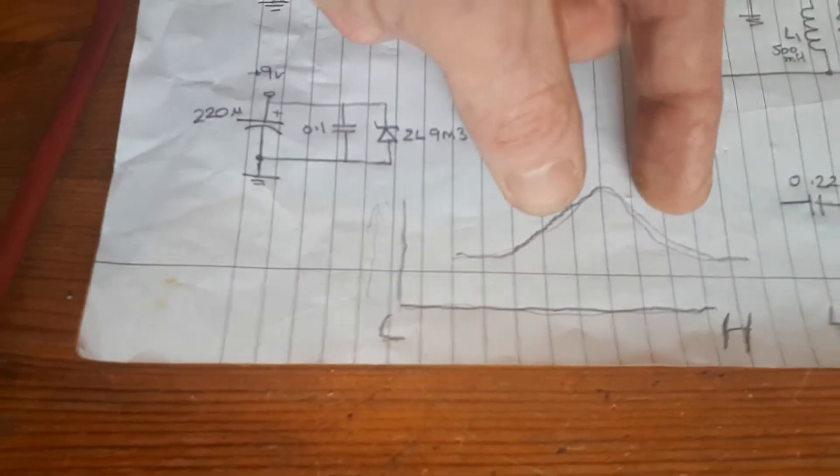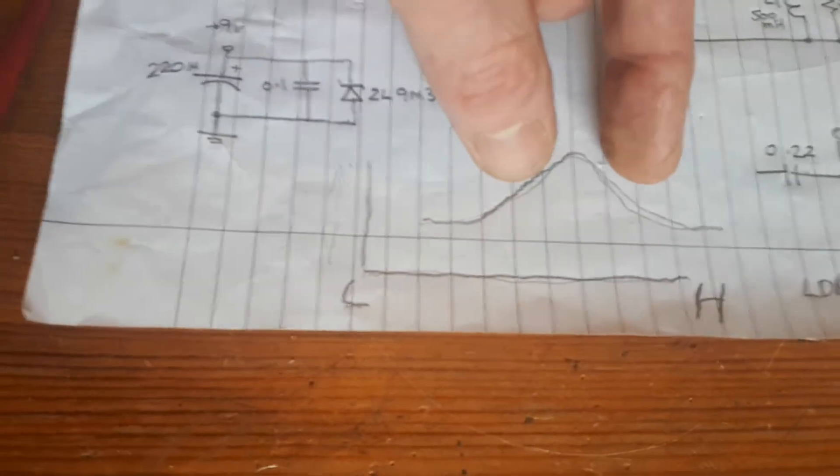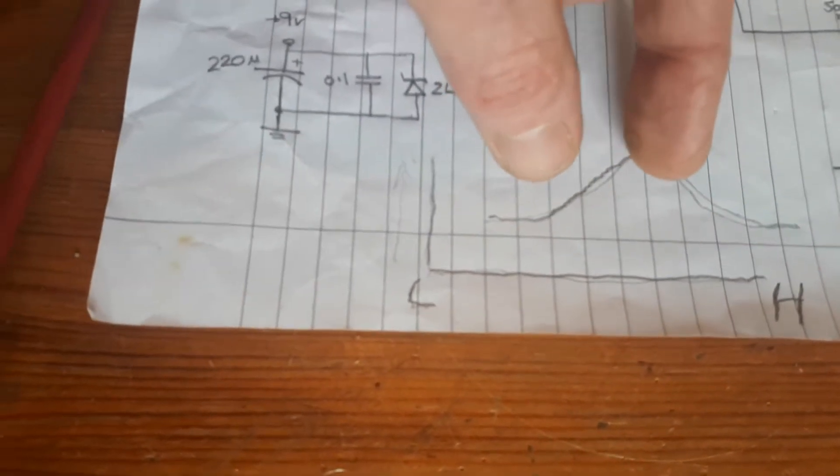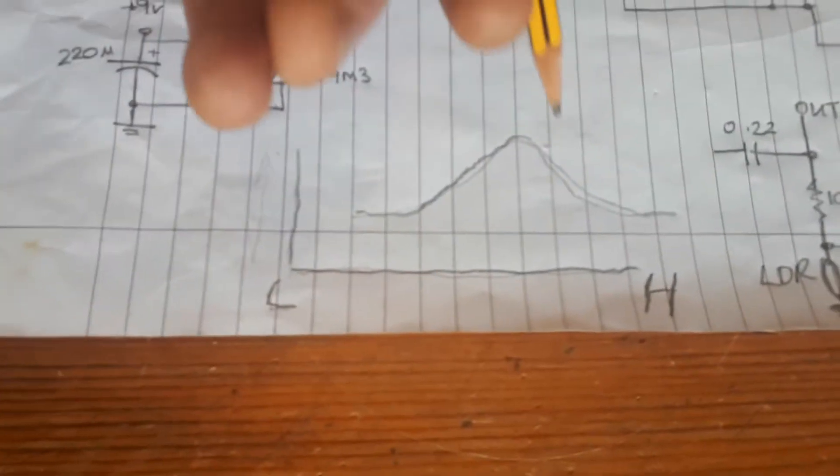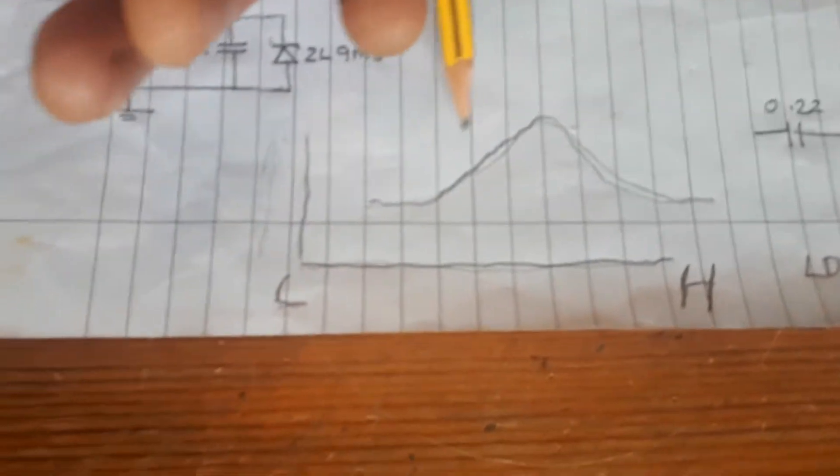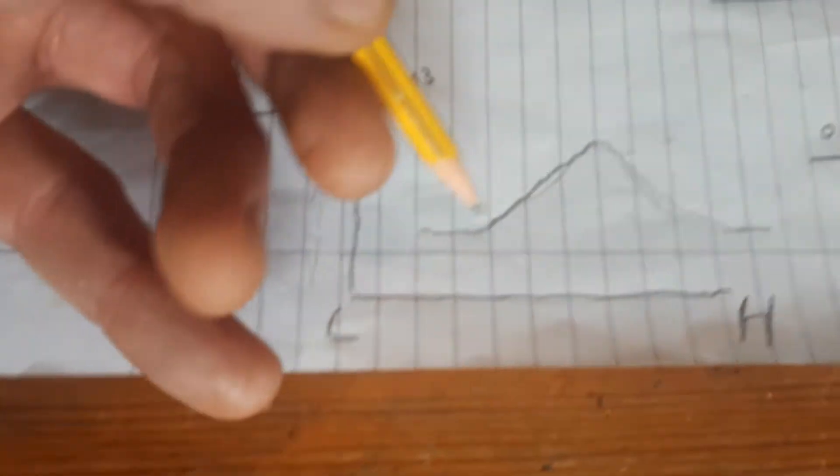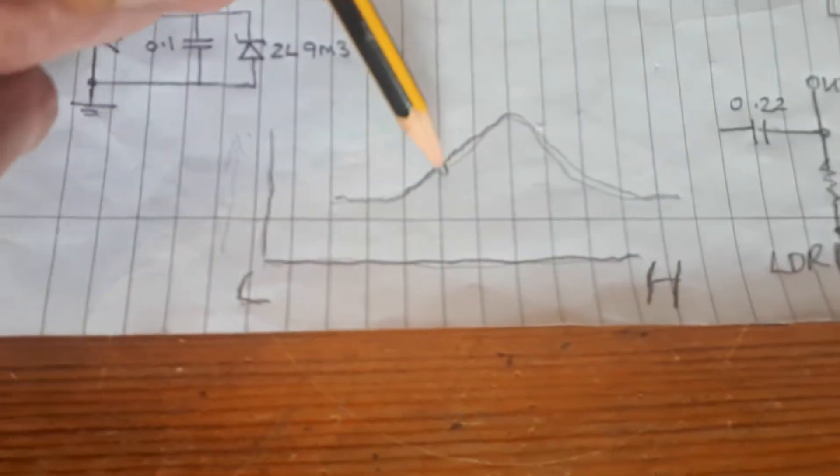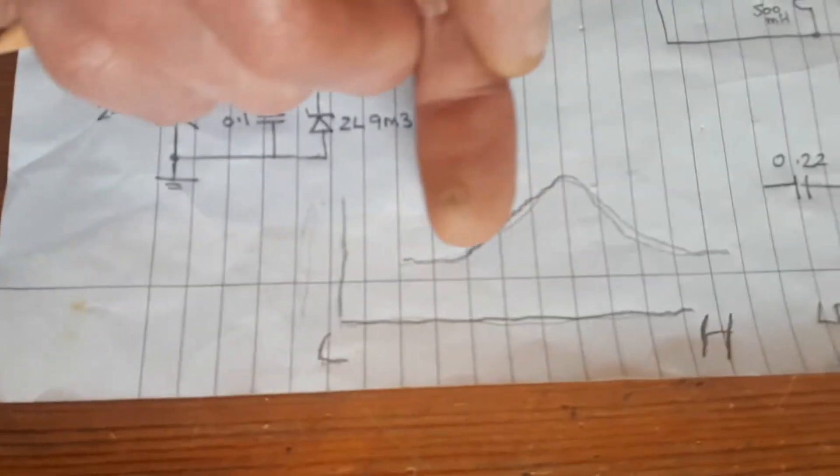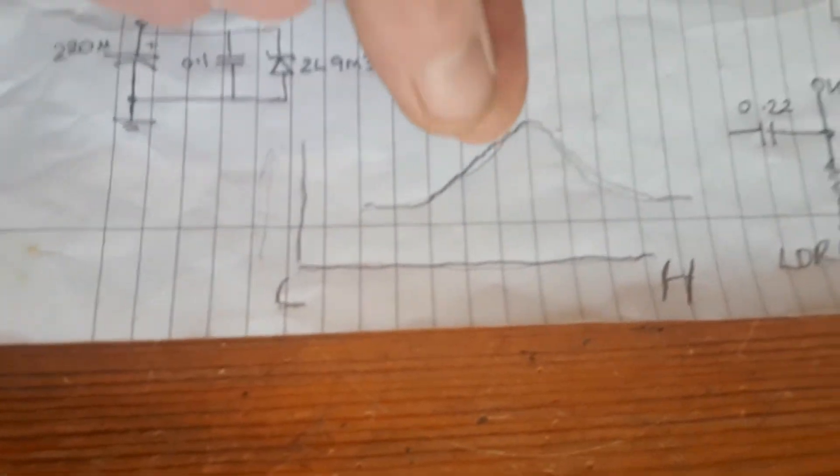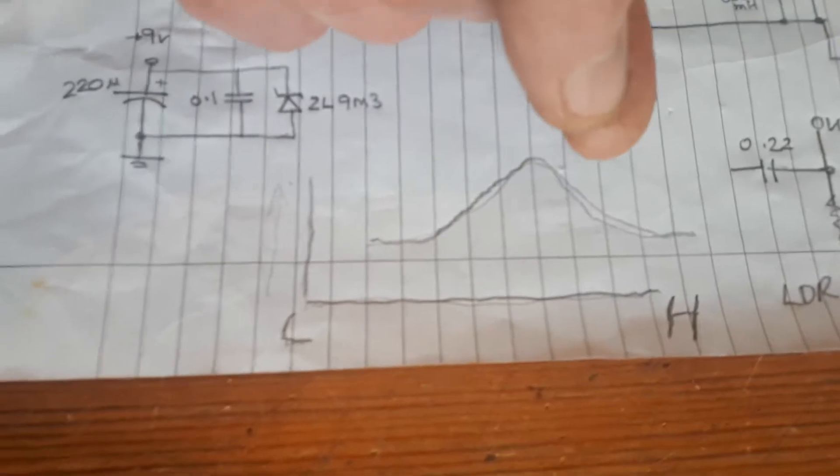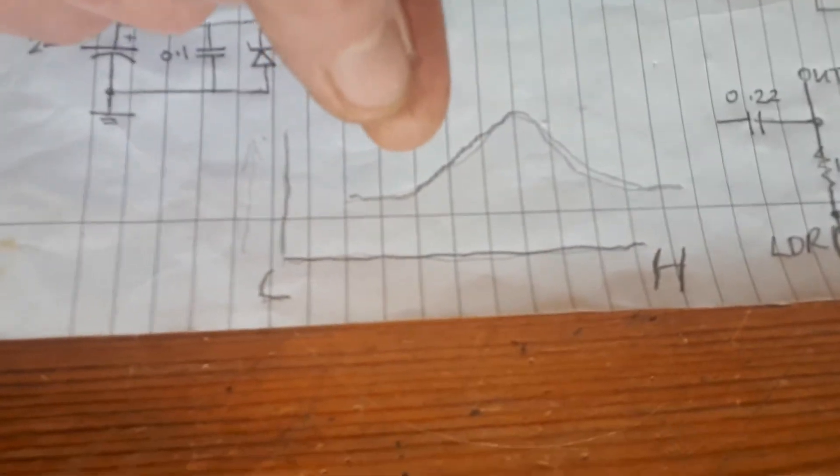So when you operate your foot pedal, you're actually moving the response backwards and forwards. There's bell shapes moving backwards and forwards and this is your wah effect. So lower frequencies are cut off and just a range of frequencies are amplified. As you rock the pedal backwards and forwards, this moves backwards and forwards, amplifying, accentuating a specific set of frequencies.